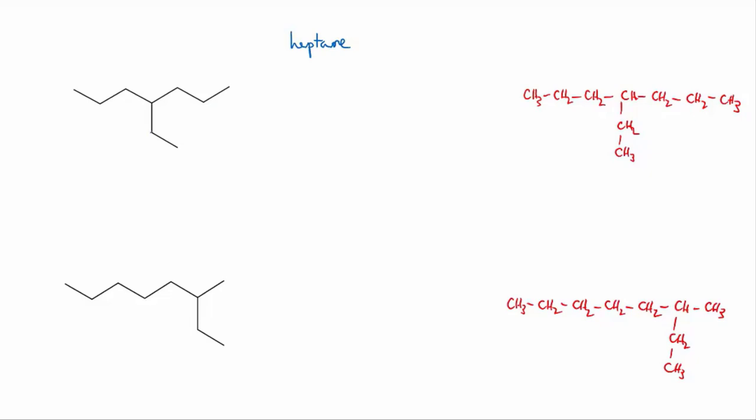There's one branch and the branch has two carbons, so the name of the branch is ethyl. Now if we number the main chain the branch is attached right in the middle, so it doesn't actually matter which direction we number in. And it turns out that the branch is on the fourth carbon.